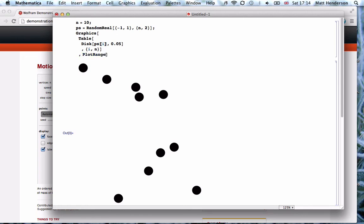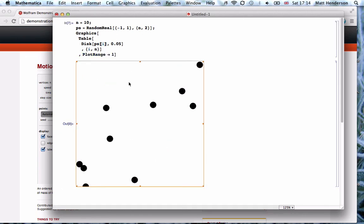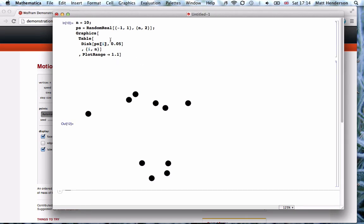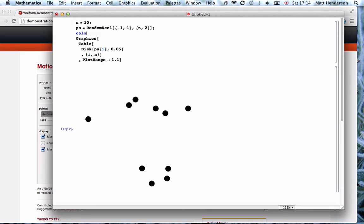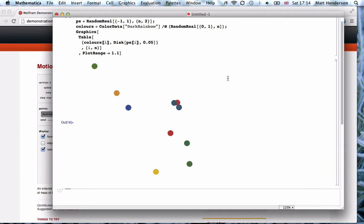We can set the plot range so that we always get a square. It might be good to color these. We'll set the color equals ColorData, let's use the DarkRainbow color scheme and have n random values drawn from that function. Now these should all be interesting colors.